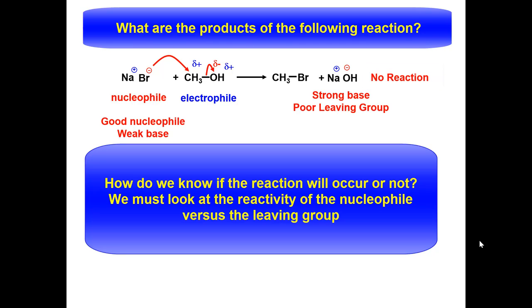This reaction would not proceed to products. Just like acid-base reactions, the reaction will favor the more stable, less reactive species. The hydroxide ion is a much stronger base than the bromide ion. The carbon-oxygen bond is much stronger than the carbon-bromine bond.